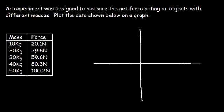Keep in mind, the dependent variable depends on the independent variable. Does the force depend upon the mass, or does the mass depend upon the force in this particular example? Notice that we can select objects with different masses, so we can vary the mass. That's something that we have control over. Therefore, this is the independent variable, which is associated with x.